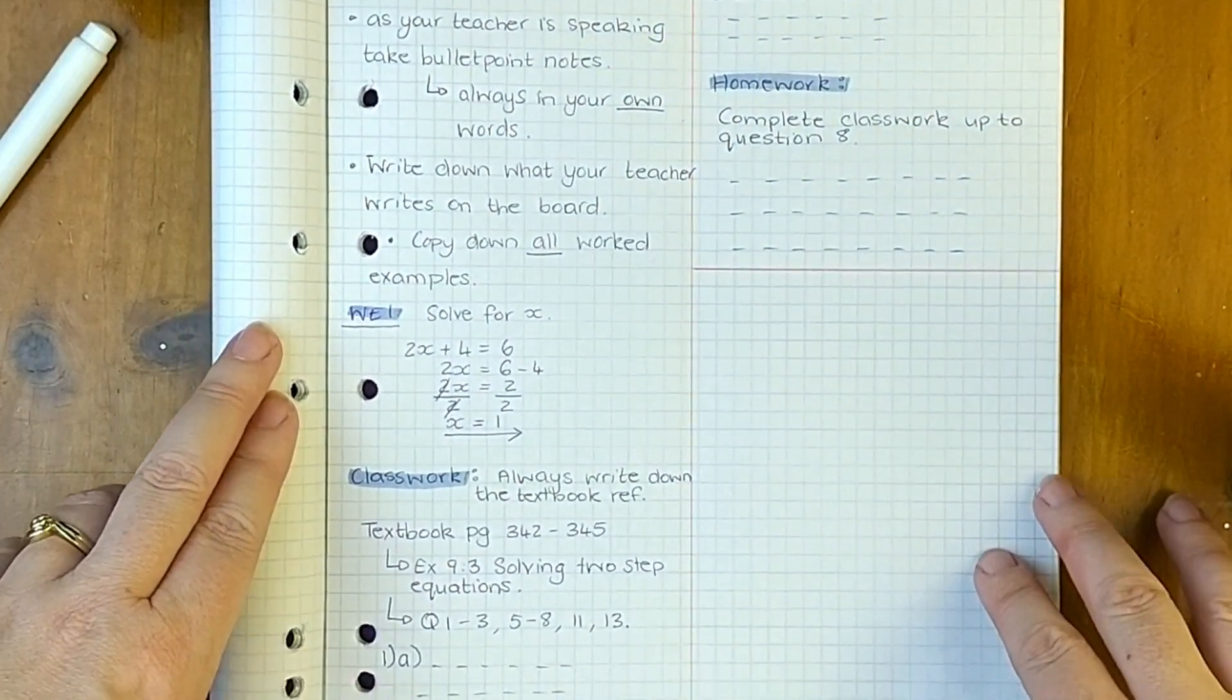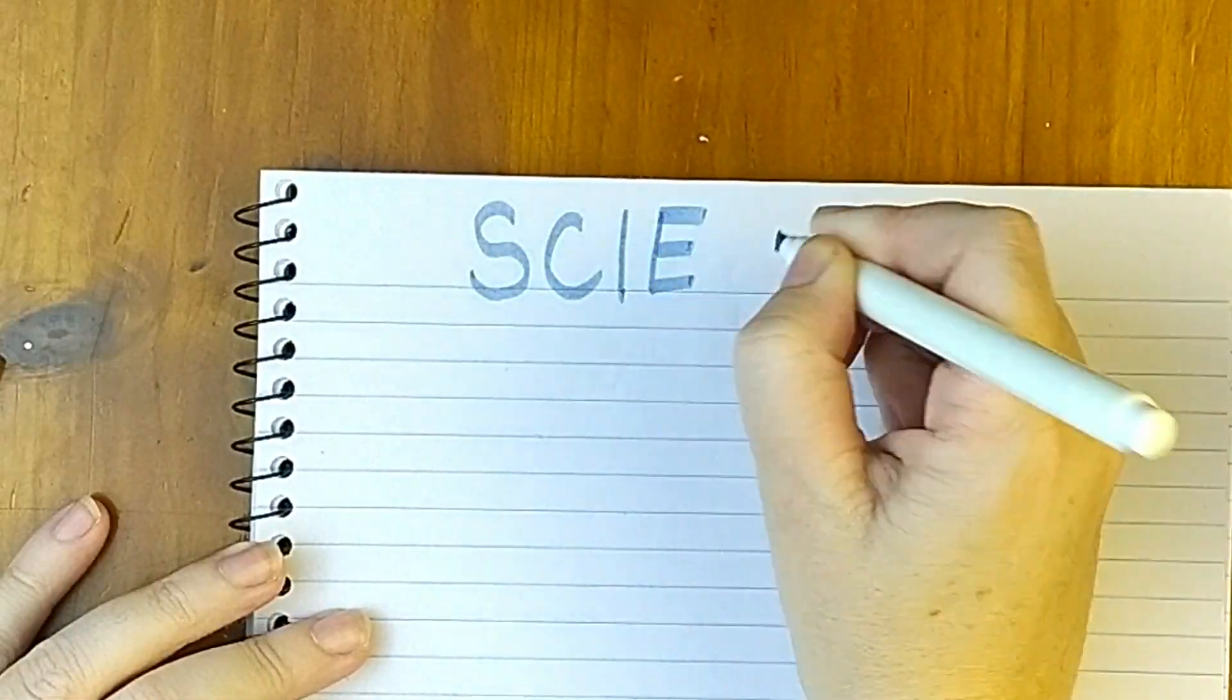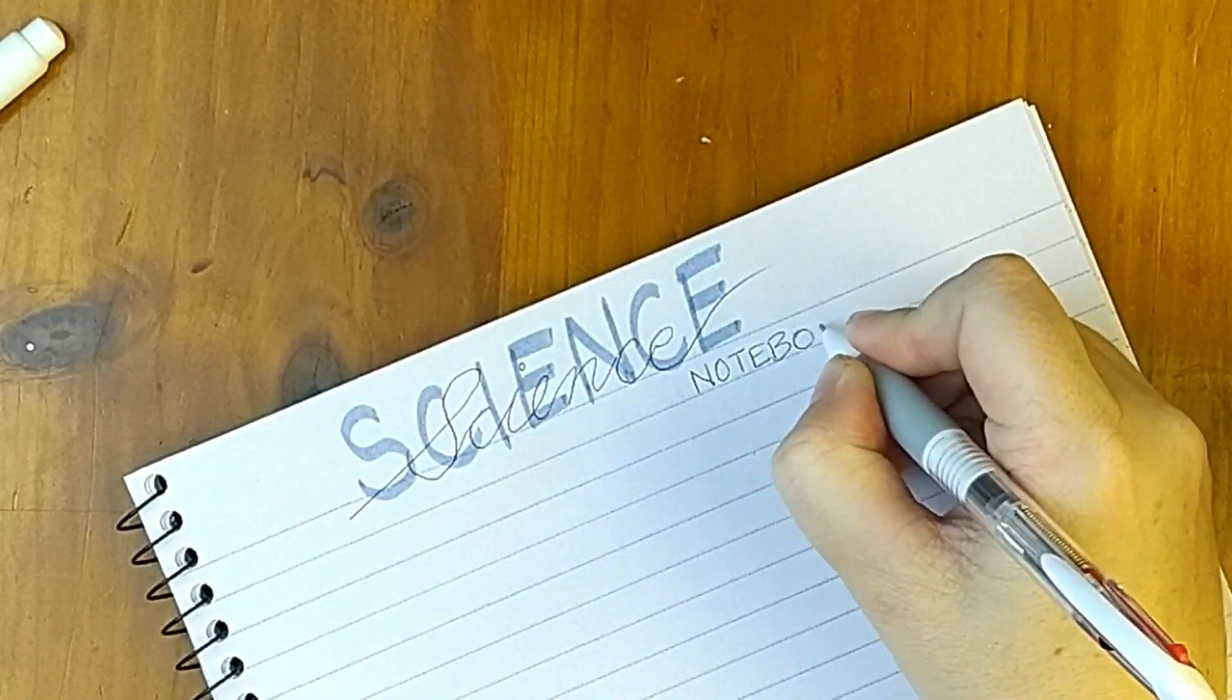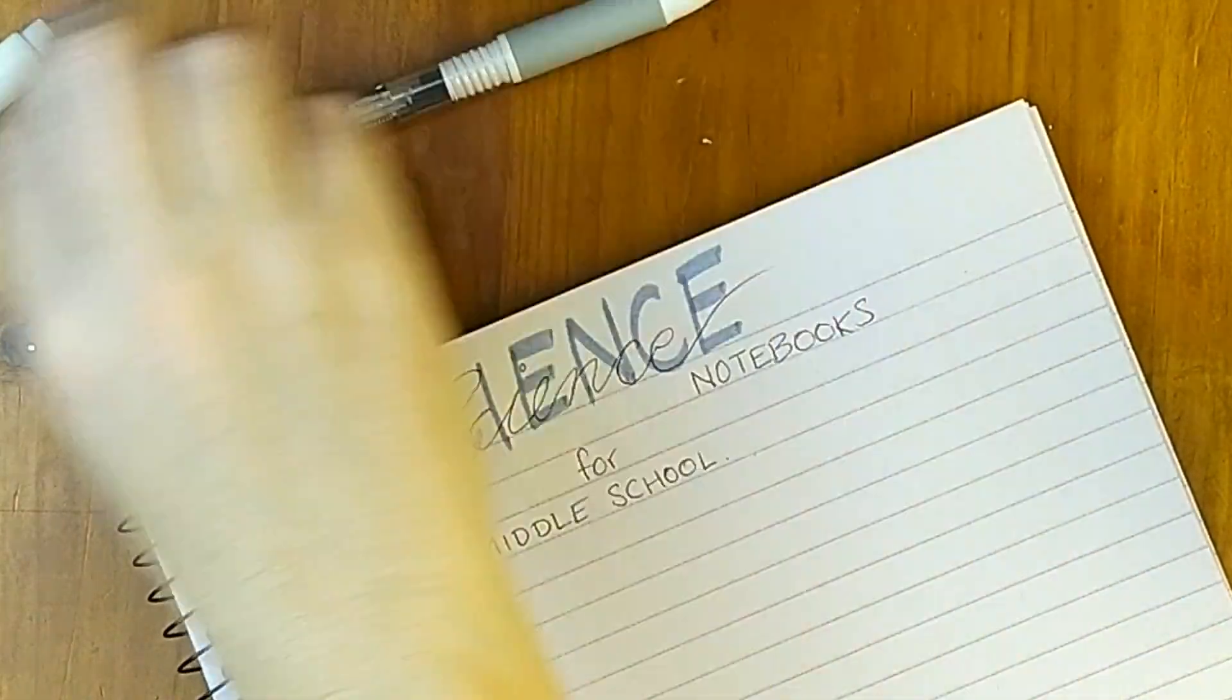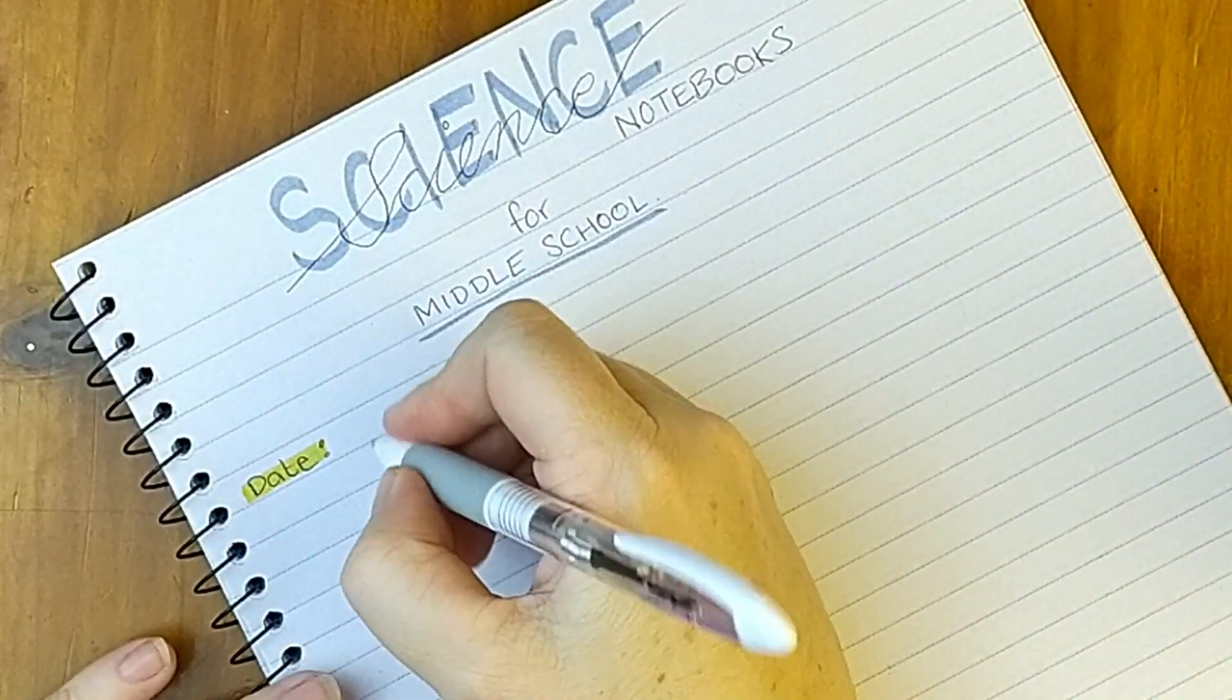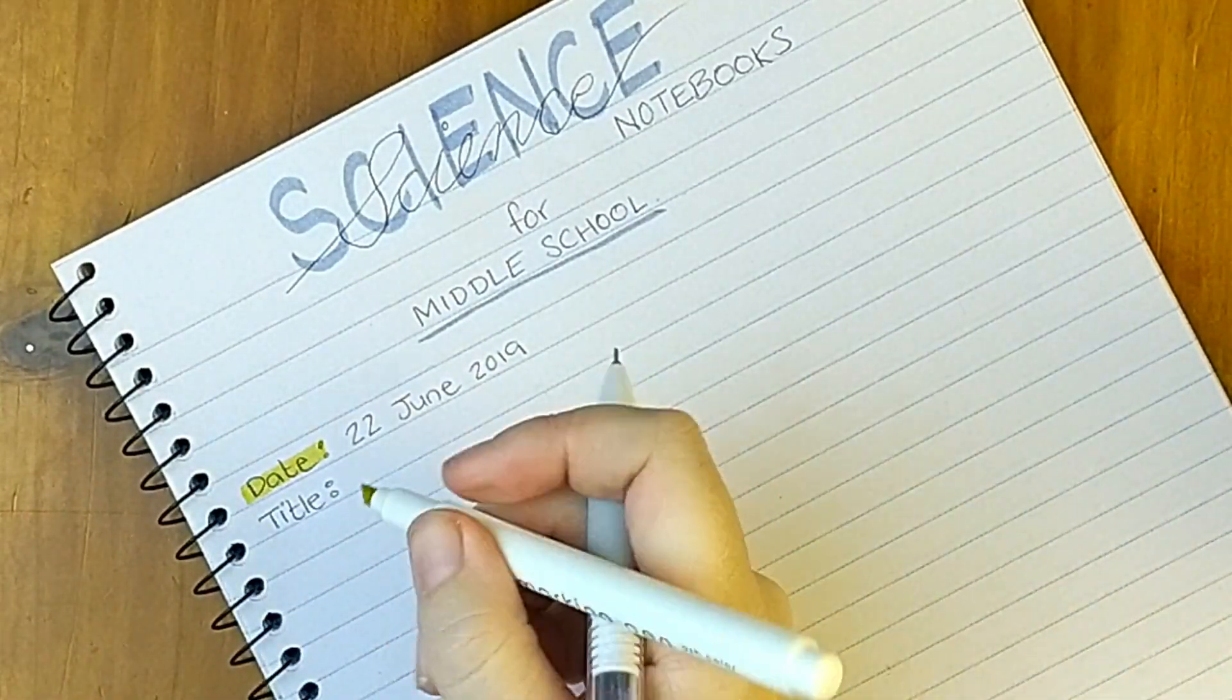All right let's move on to science notebooks for middle school. Now for science we give our students just normal lined paper notebooks which is nice and easy for them if they need to replace them because we only give them one. First thing we're going to write is the date and we're going to highlight that as well. You can write it numerically or you can write it just like I have done here for science, doesn't really matter. And we always put a title in, highlighted as well.